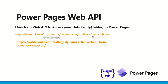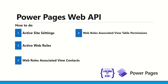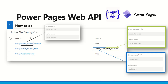In this video I will explain four activities you must do. The first one is activate site settings. The second one is activate web rules. The third is associate those web rules with your view contacts. And the fourth is associate web rules with your table permissions.